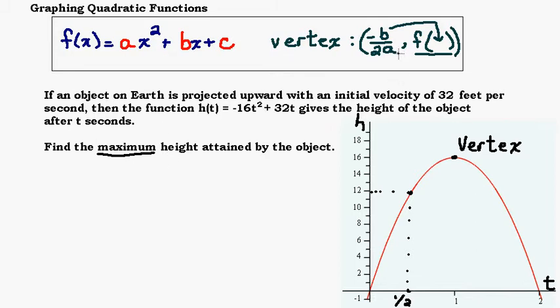In order to find the vertex, we're going to use this formula, the opposite of b over 2a. In this case, for our equation, our b value is 32, and our a value is negative 16. Our c value would be 0 if we needed it, but we don't need it to find the vertex.